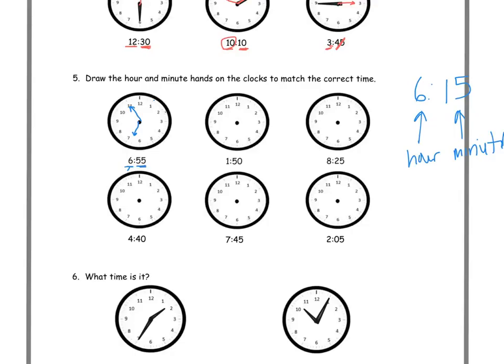I'll do two more of these. One right here, 8:25. I know it's past 8, 25 minutes. So I'm going to find 25 minutes, and I know I'm starting at 0 and 5, 10, 15, 20, 25. So there's the minute hand, which is right here. And then my 8 is my hour hand. And I know it's past 8 o'clock because it's 8:25. So I've got to go a little past 8. And that's my hour hand.